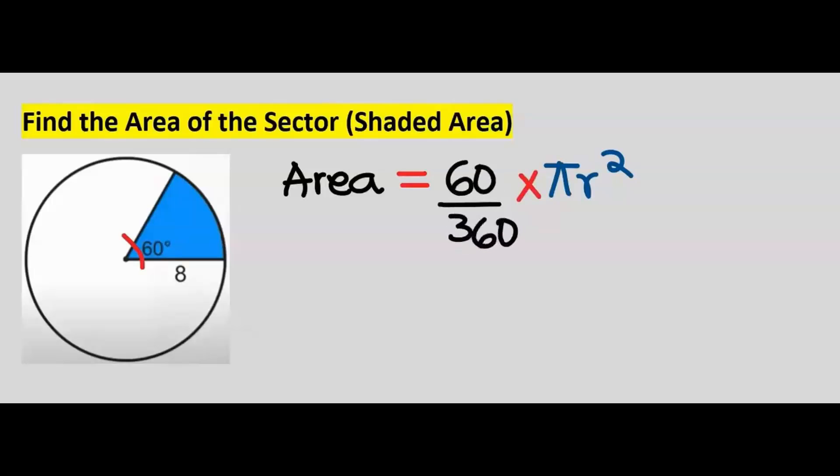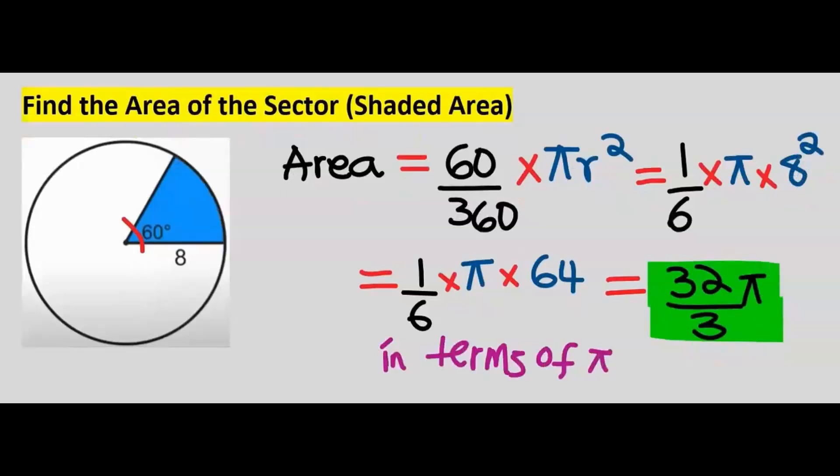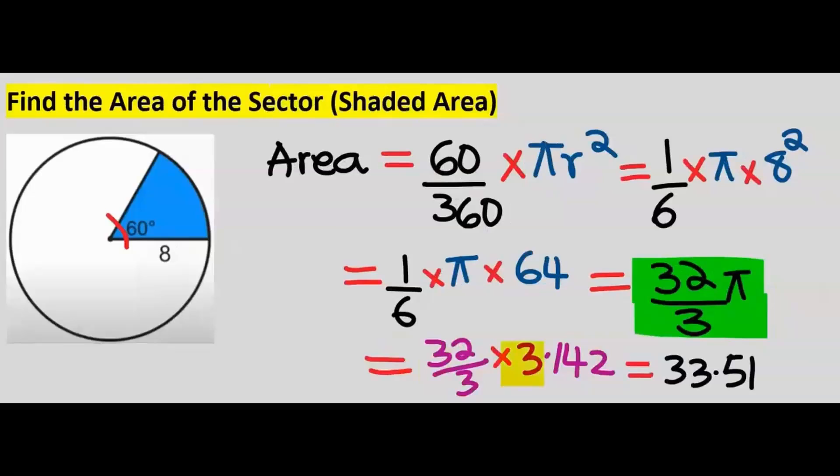Next, we're going to substitute for the radius, which is 8. Substituting and solving carefully, our answer is 32π/3. Here we have left our answer in terms of π.